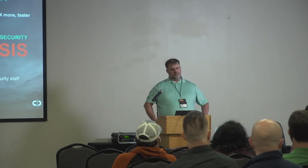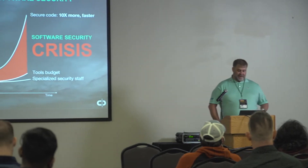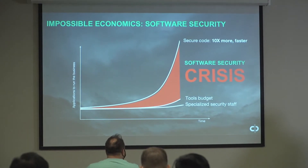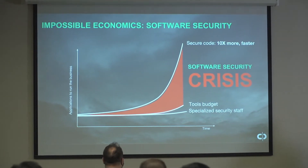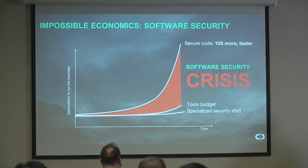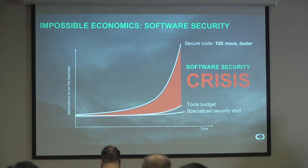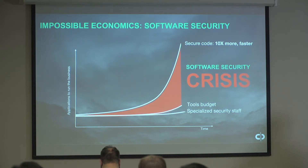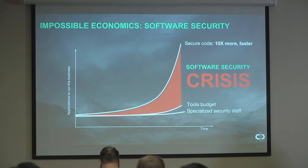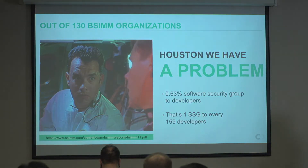Everything is a software company now — everyone is building software, hiring more engineers, writing more code, and doing it faster than ever to keep up with competitors. The average developer writes anywhere from 10 to 30,000 brand new lines of code a year, and there are millions of them. When you add that up, how are we going to secure all this? We have a certain amount of budget for tools and a tiny staff compared to the number of people writing code.